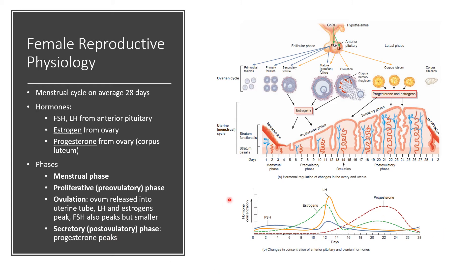To summarize: you have the menstrual phase, the pre-ovulatory phase, ovulation, and the post-ovulatory phase. At ovulation, LH and estrogen peak; FSH also peaks but it's smaller. In the post-ovulatory phase, progesterone rises because it's secreted by the corpus luteum, along with a smaller rise in estrogen also from the corpus luteum. Pause this video and study these diagrams in detail if needed.